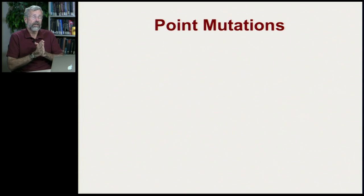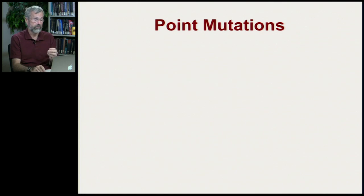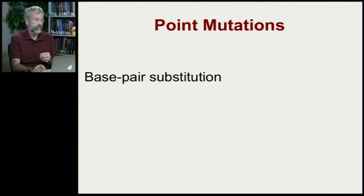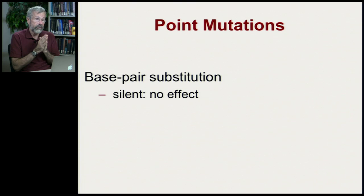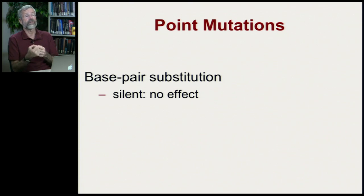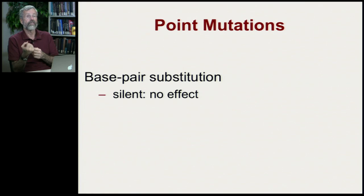I want to talk about a variety of different kinds of mutations. The first ones are called point mutations. These are where we have a base pair substitution. There are several different kinds of base pair substitutions in terms of their consequences on the physical structure of the body.